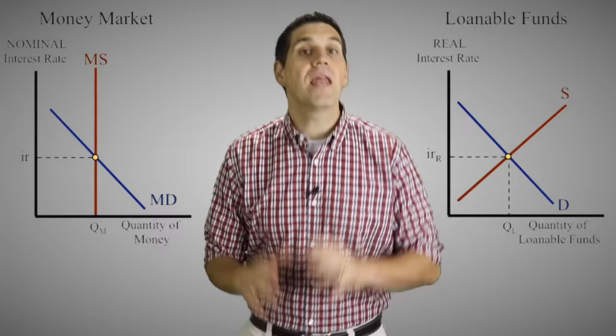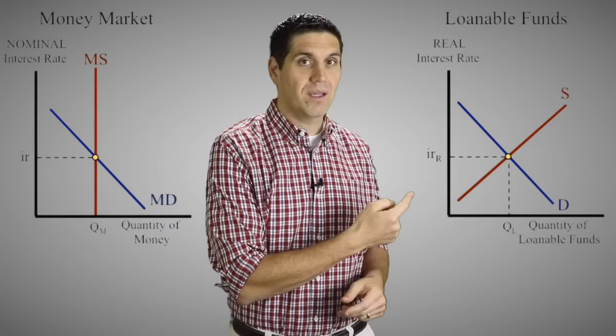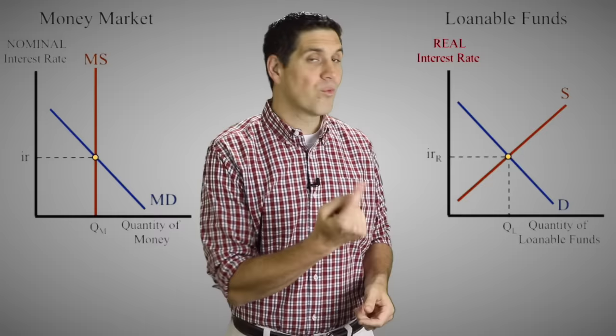Hey internet, this is Jacob Clifford and welcome to ACDC Econ. In a macroeconomics class you'll see two graphs that are both labeled interest rates. We have the money market graph and the loanable funds market, but why are there two graphs in the first place? Why is one labeled nominal interest rates and the other one real interest rates, and how does one graph affect the other one?